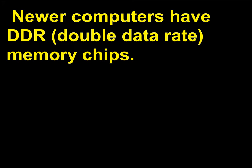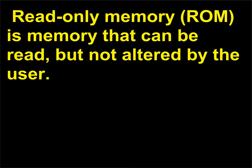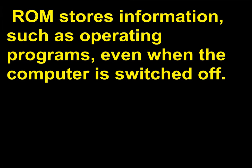Newer computers have DDR, double data rate, memory chips. Read-only memory, ROM, is memory that can be read but not altered by the user. ROM stores information, such as operating programs, even when the computer is switched off.